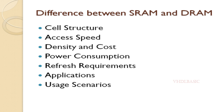DRAM is commonly used for main memory in computers, smartphones, tablets, and other devices where a balance between storage capacity and access speed is important. Usage scenarios: SRAM is suitable for applications that demand low latency and high-speed memory access where cost and power consumption are secondary concerns. DRAM is suitable for applications that require a balance between storage capacity, access speed, and cost, making it a practical choice for general-purpose memory in most computing devices.